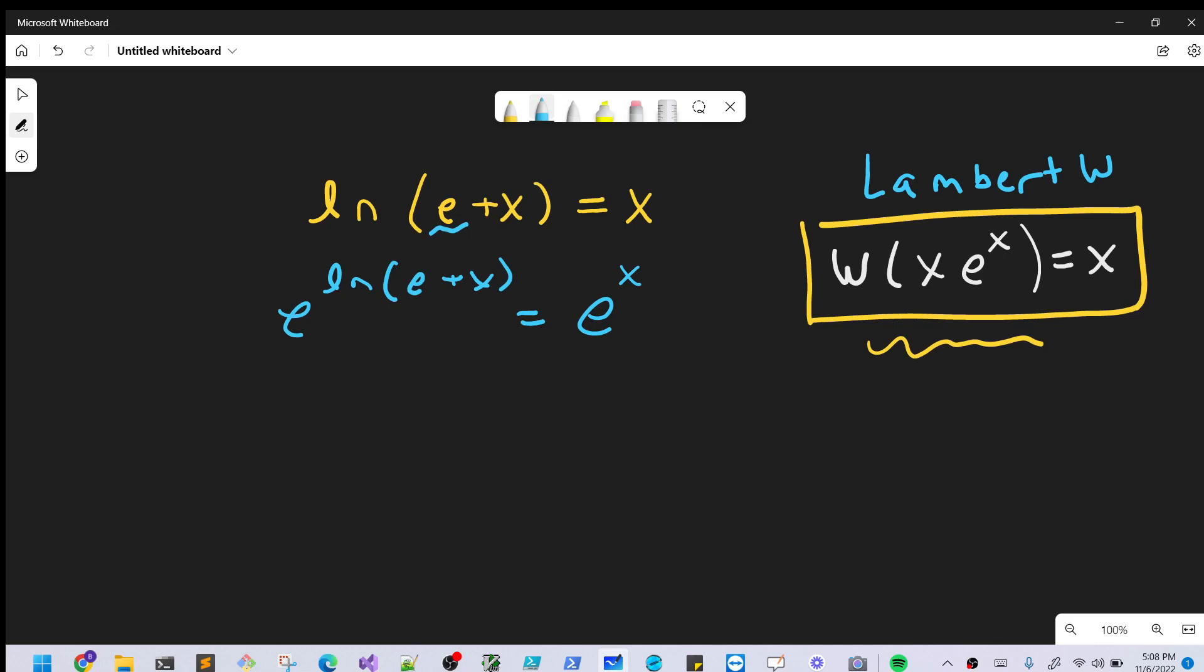And the nice thing about that is we can actually cancel, e to the ln is just the inside stuff here, so we can essentially cancel that out, and that gets through the ln, which as you can see isn't really helpful for these type of problems.